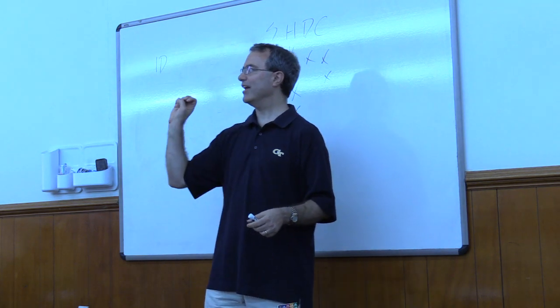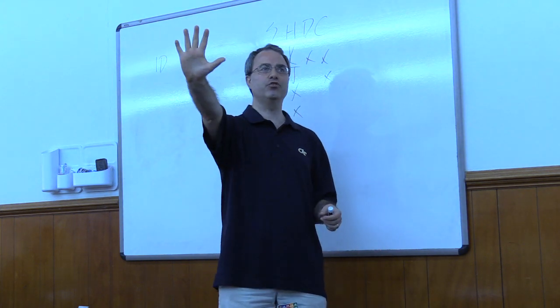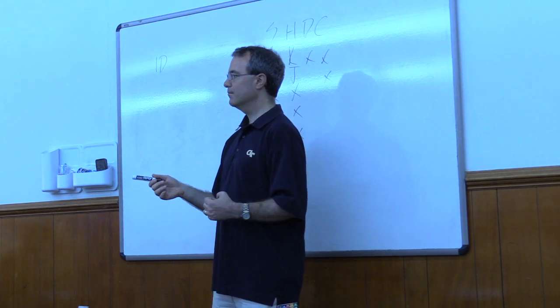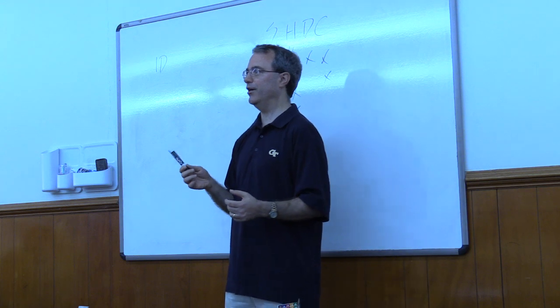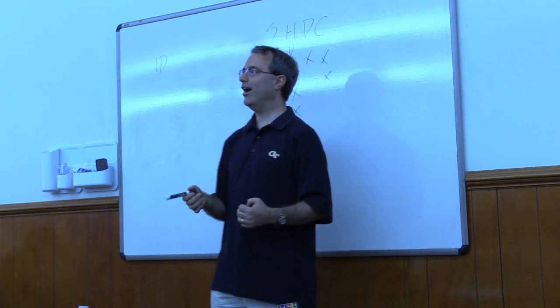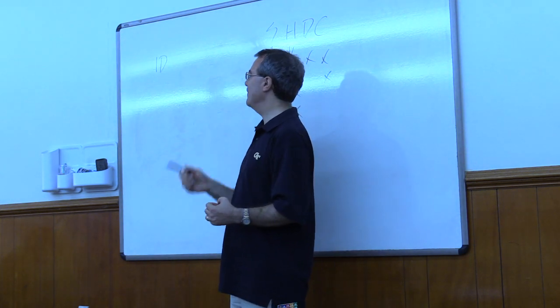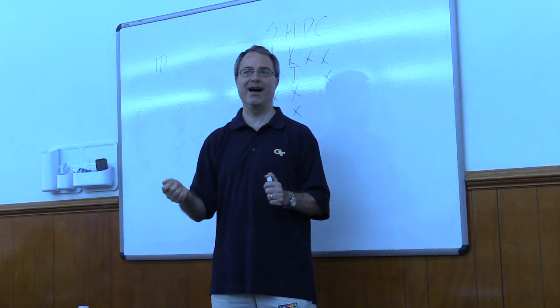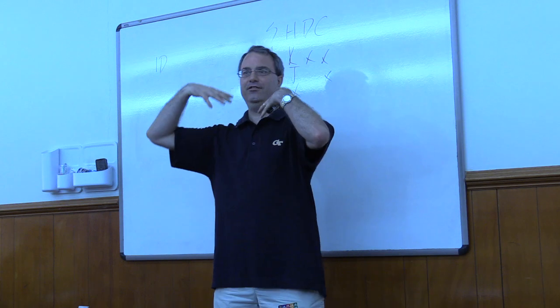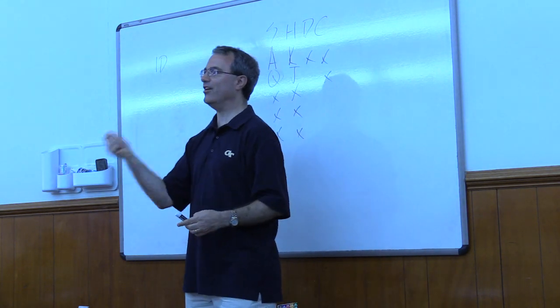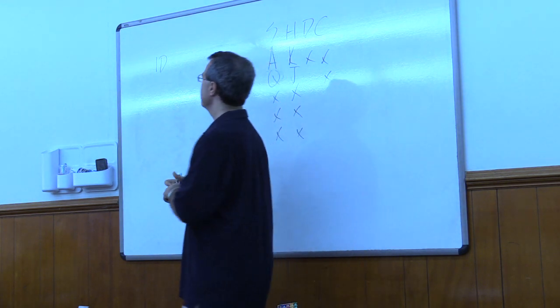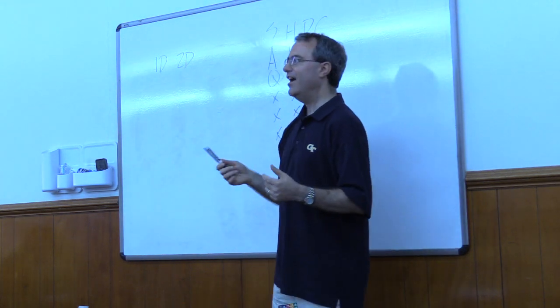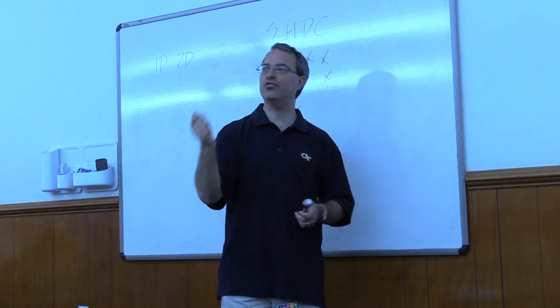So today we're going to talk about two specific overcalls where I can show two suited hands. The first is called a Michaels cuebid. So who here has never played a Michaels cuebid? Oh my goodness. That's a lot of hands. All right. So if I am trying to make a Michaels cuebid, how would I start that sequence after my right hand opponent opens one diamond? Two diamonds. It would probably be some sort of cuebid. Hence the name. So when I make a Michaels cuebid, I'm going to cuebid. A cuebid is when I bid the opponent suit.